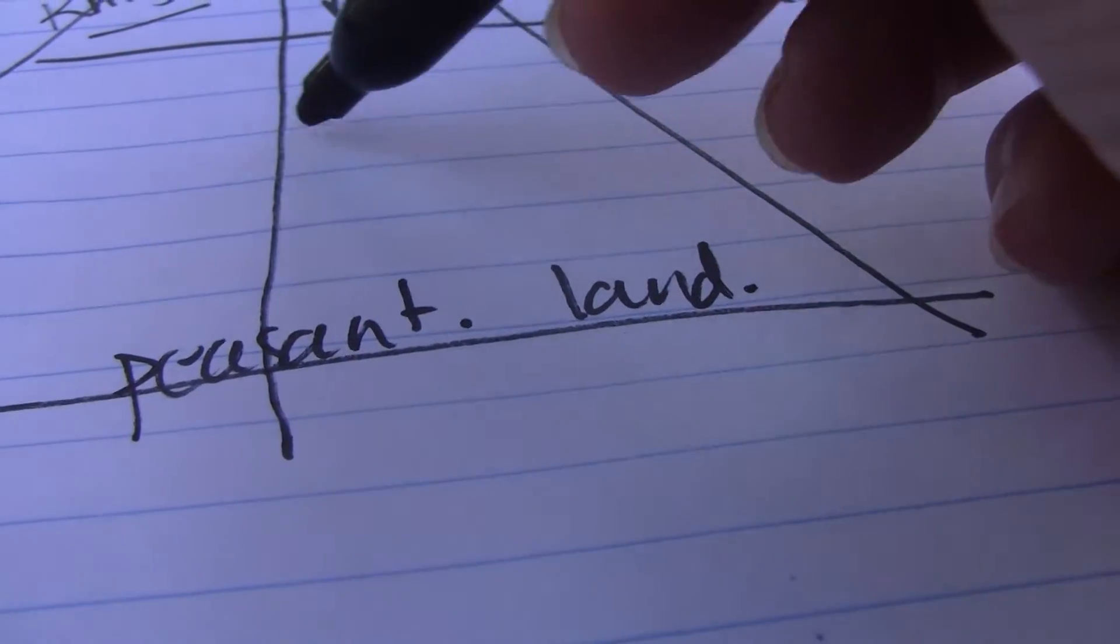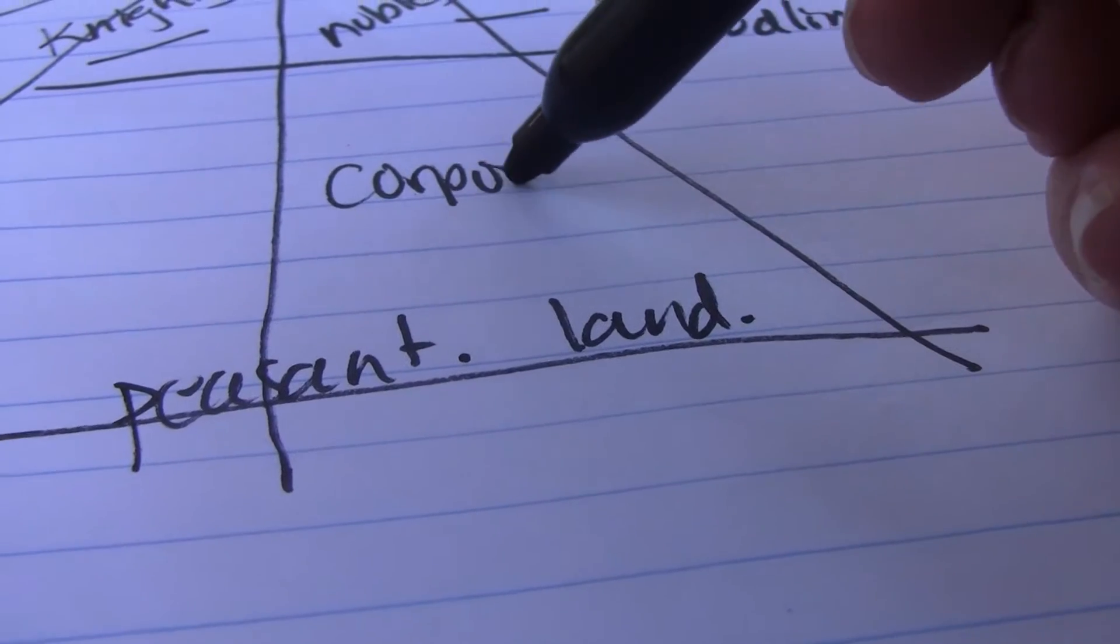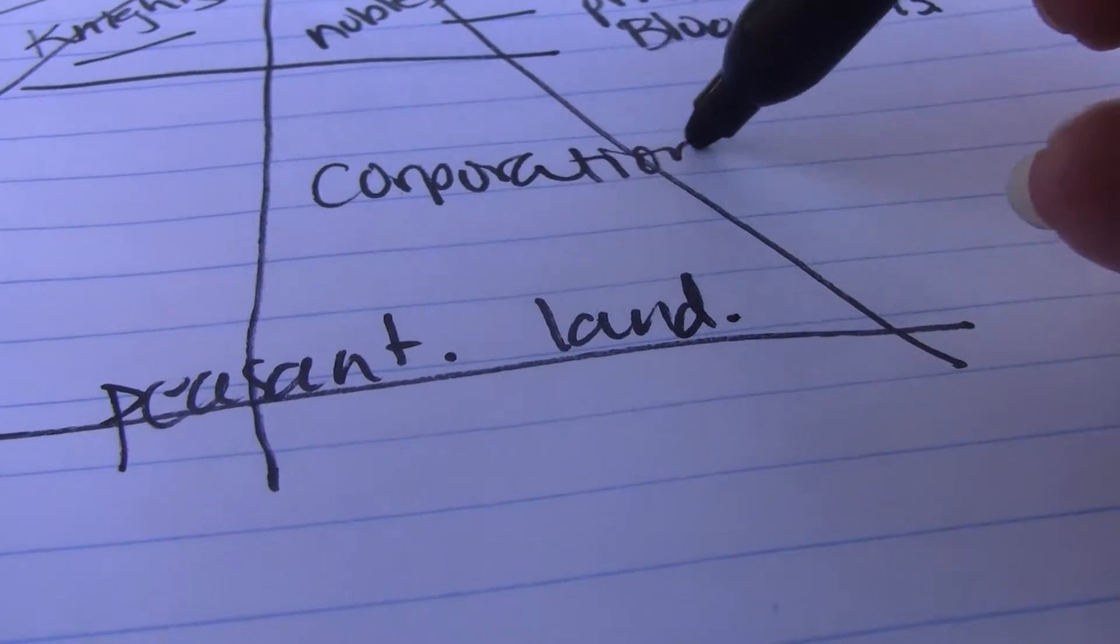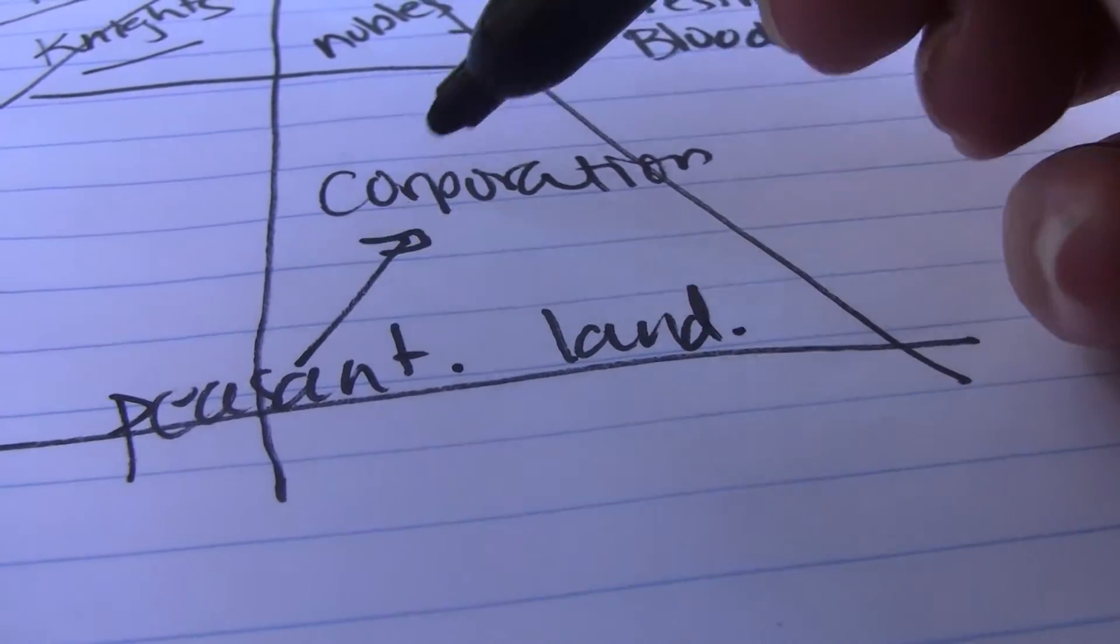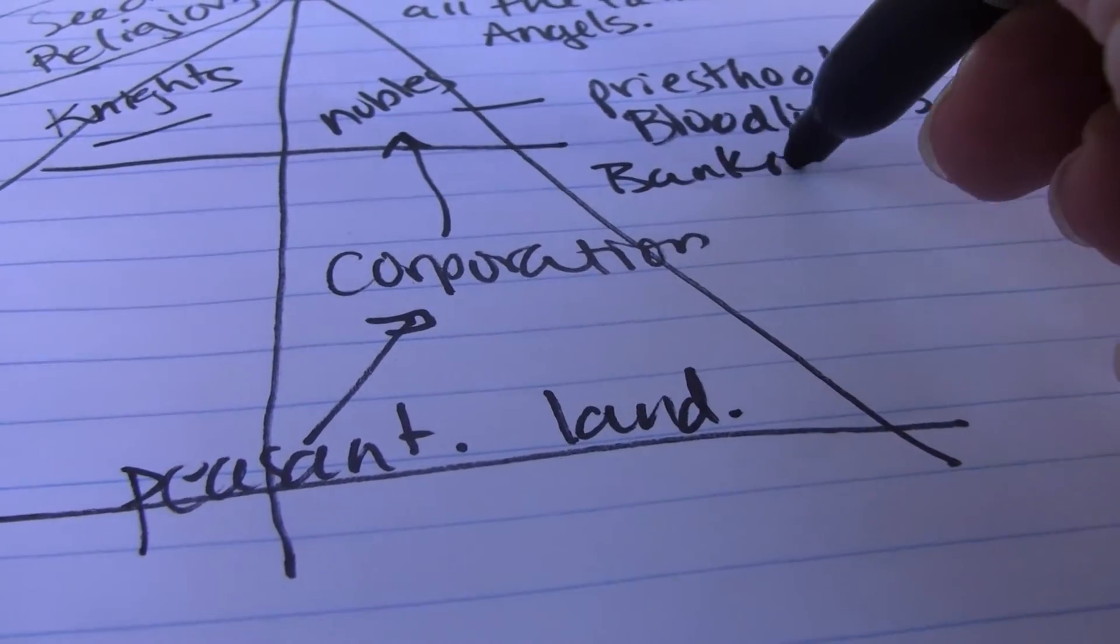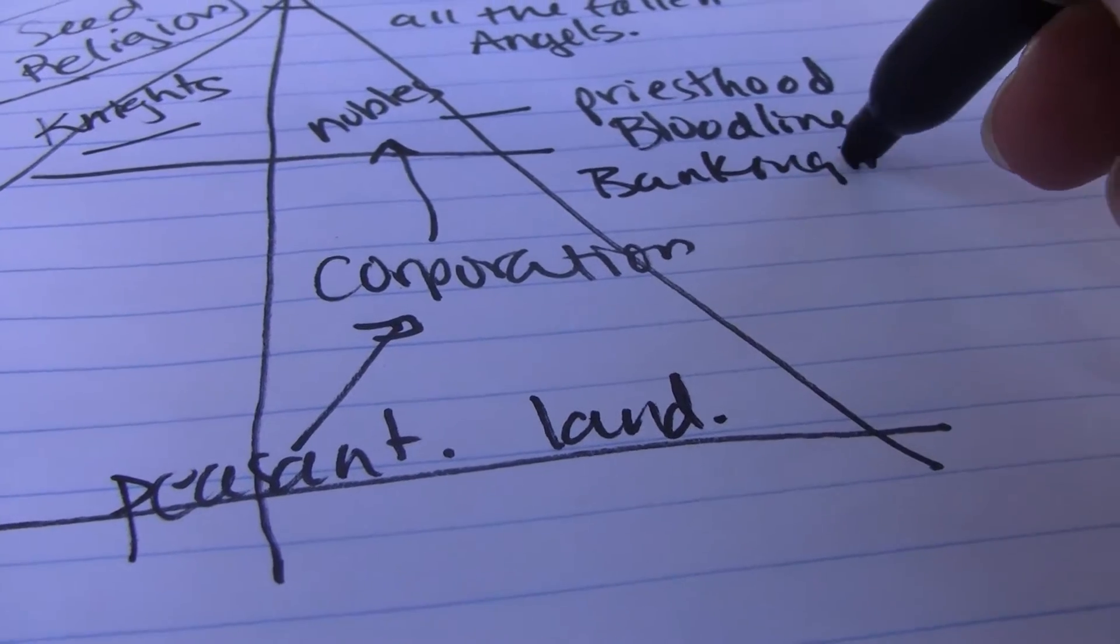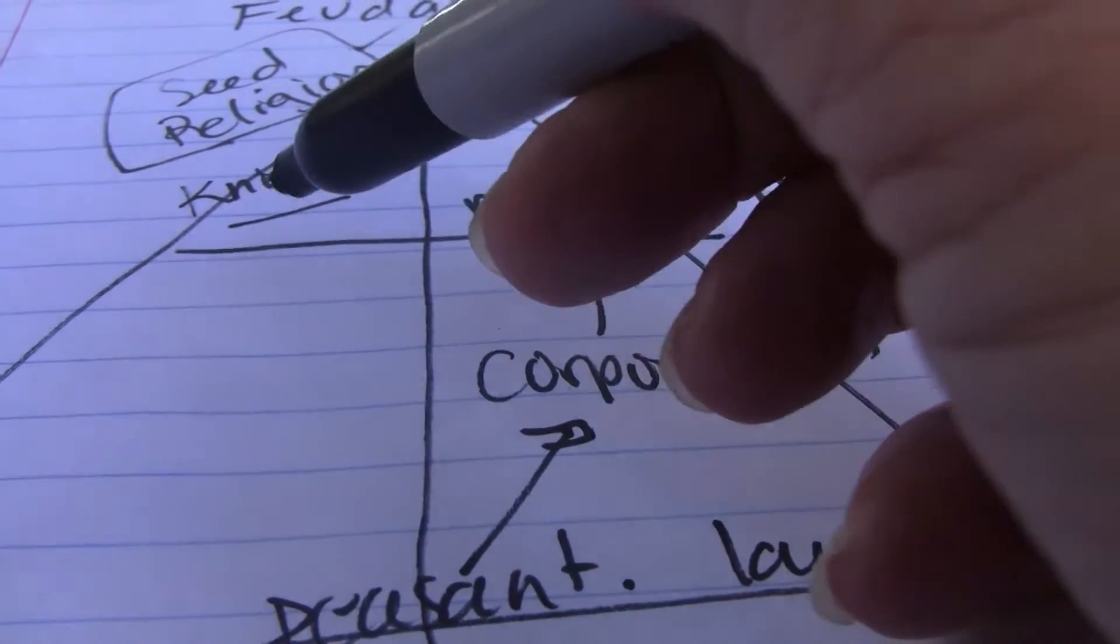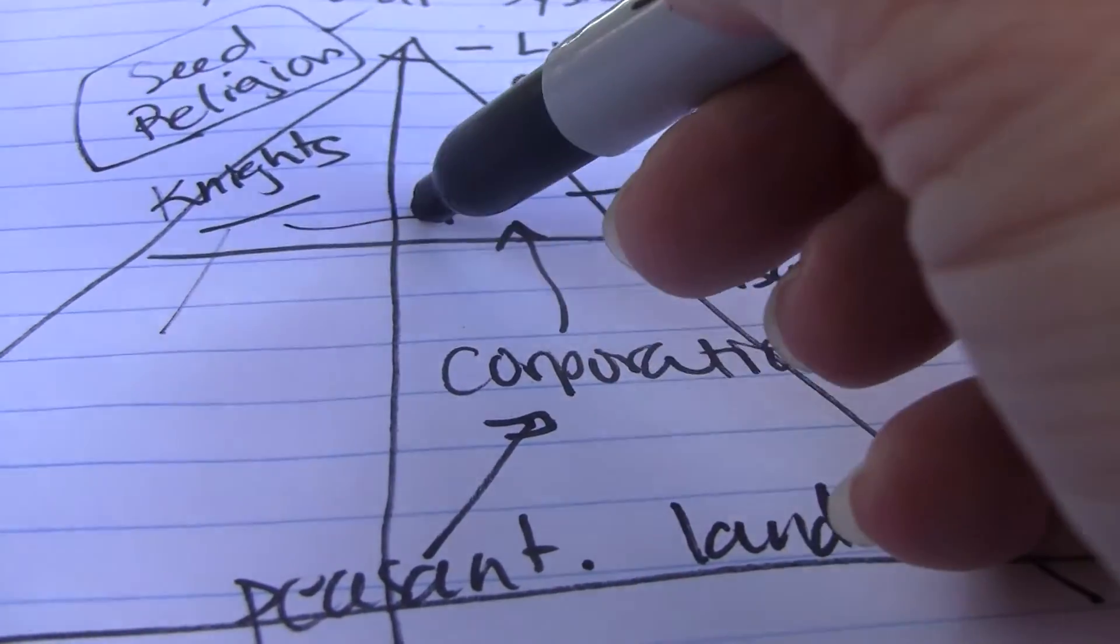And in between this and here you get your corporations and shit. And these people work for the corporations that feed them. This is the banking system. So over here your Knights work for the nobles.